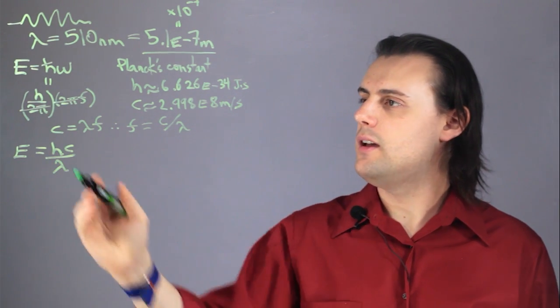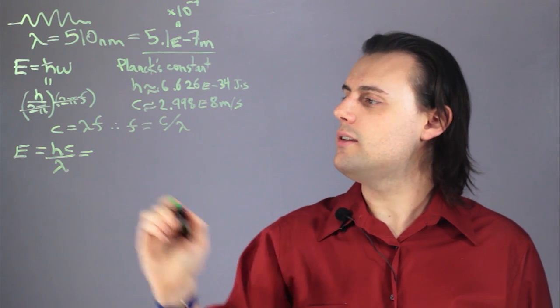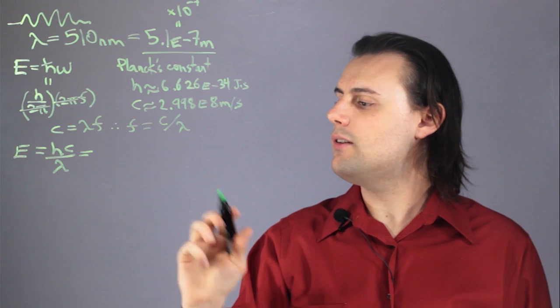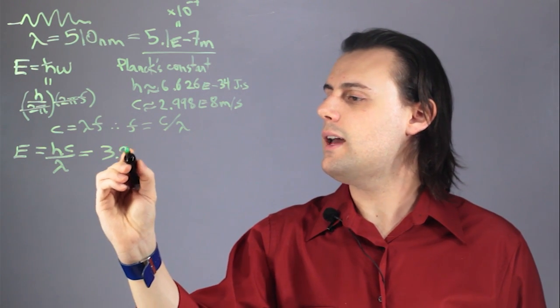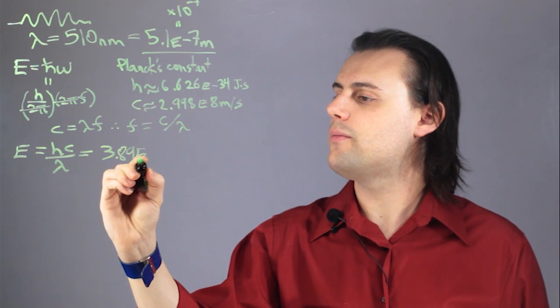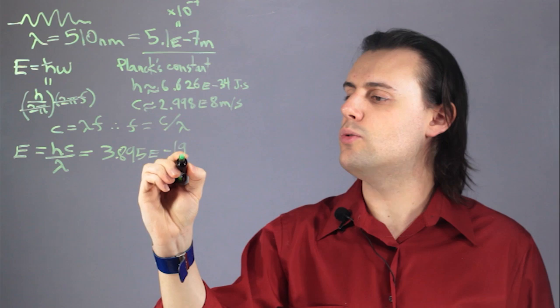So when I stick in these three constants, I'm going to have an energy that's equal to approximately 3.895 times 10 to the negative 19 joules.